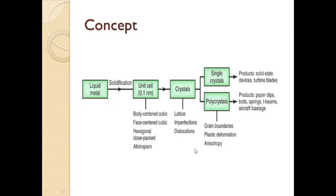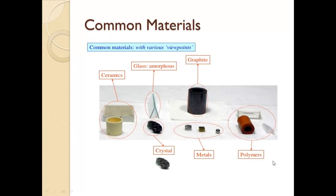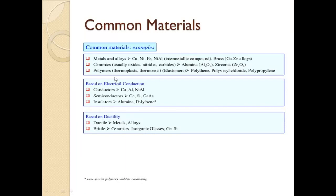In polycrystalline materials, we can observe grain boundaries, plastic deformation, anisotropy, etc. The common materials, which is the classification of material, are as follows: metals, polymers, crystals, glass (an amorphous material), ceramics, and graphite. These are the various commonly used materials for engineering applications.